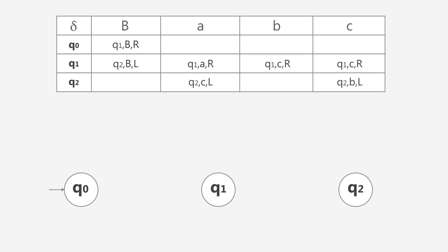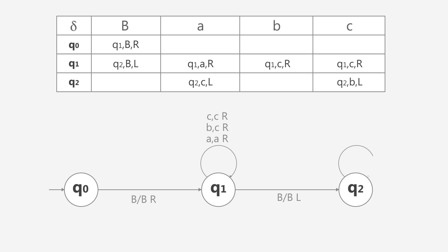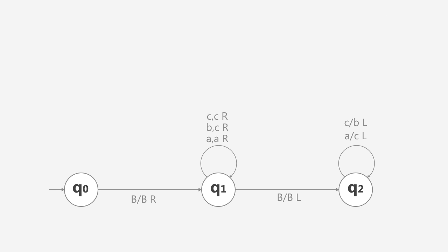We assume Q0 is the initial state. The output for Q0 leads to Q1, reading a blank string and outputting a blank string, moving right. Q1 also reads a blank string moving left, and reads A, B, and C strings moving right, looping back to Q1 itself. Lastly, Q2 also has a loop to itself where the input string is either A or B.